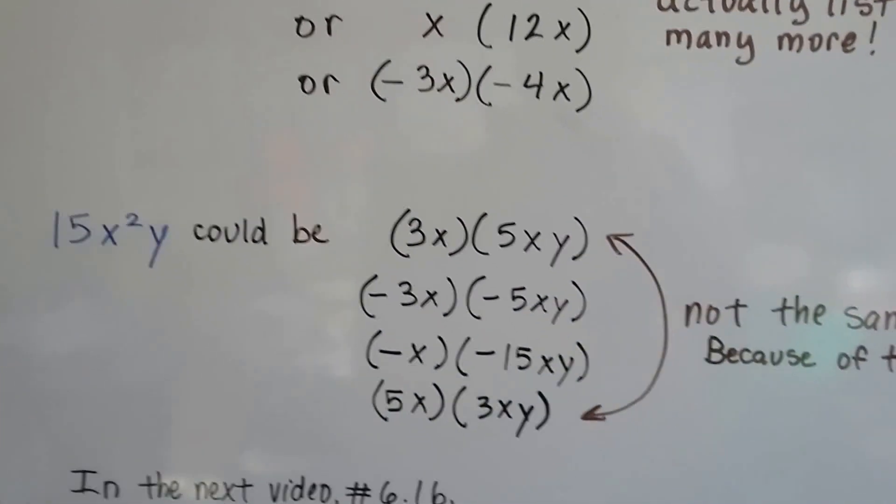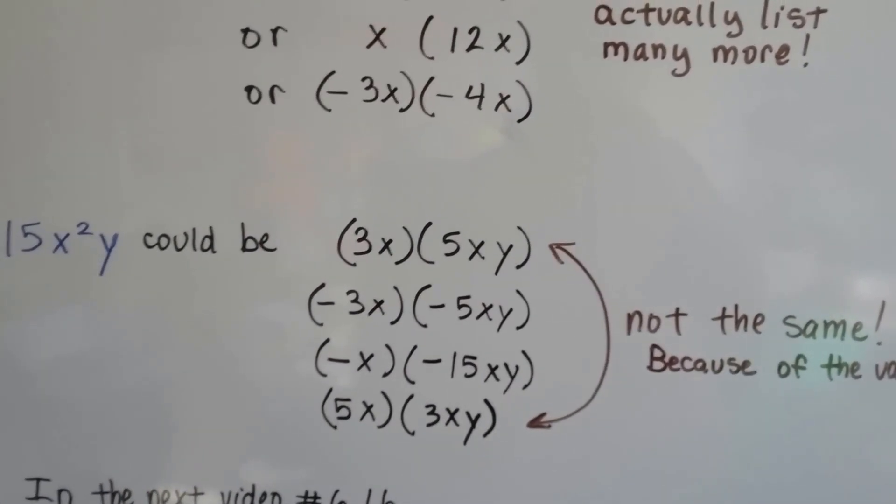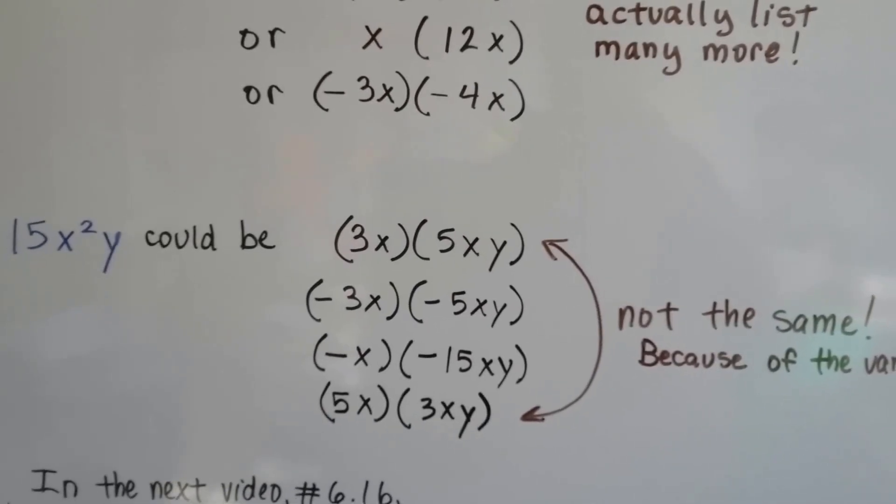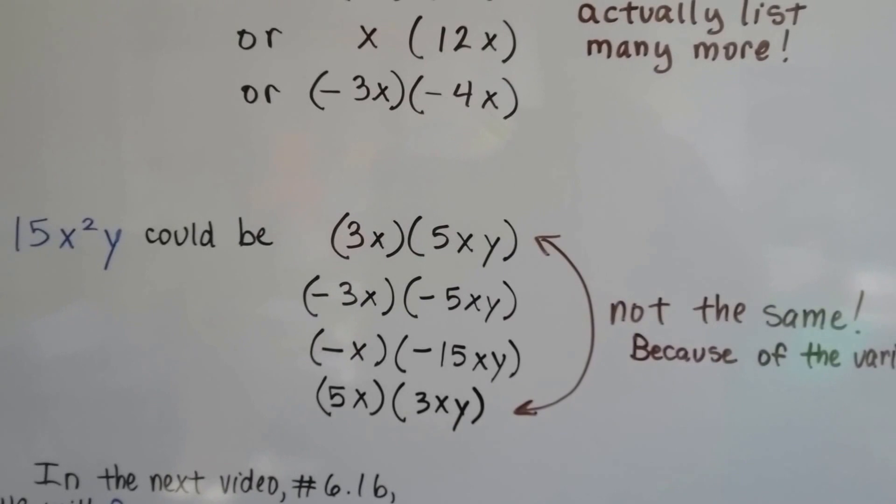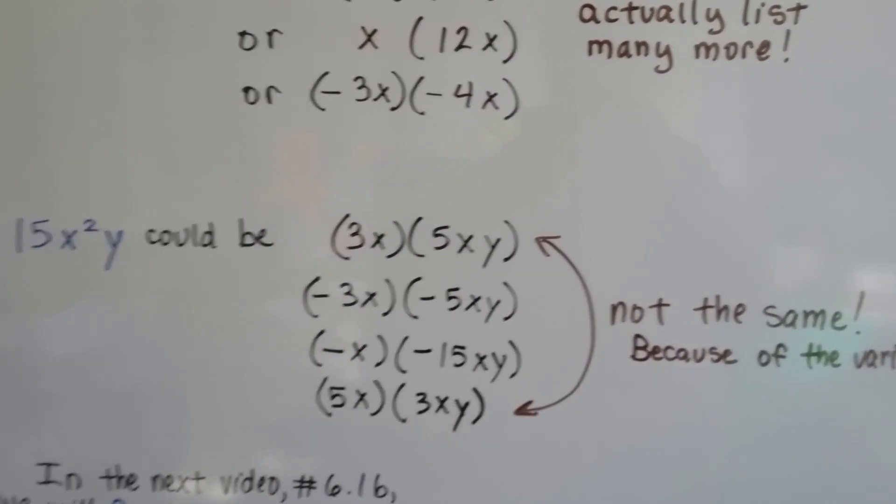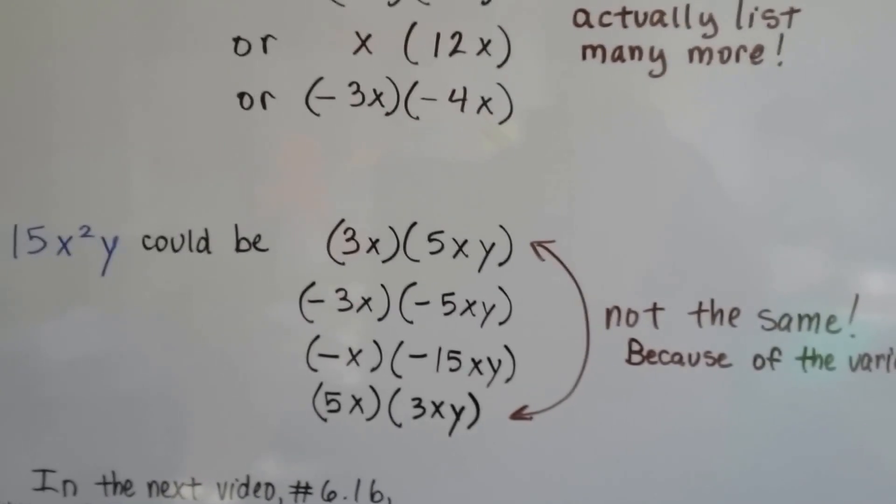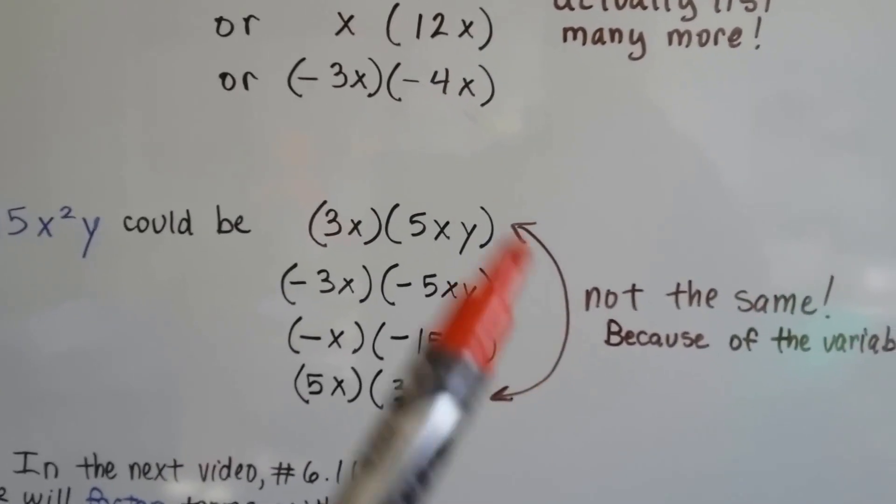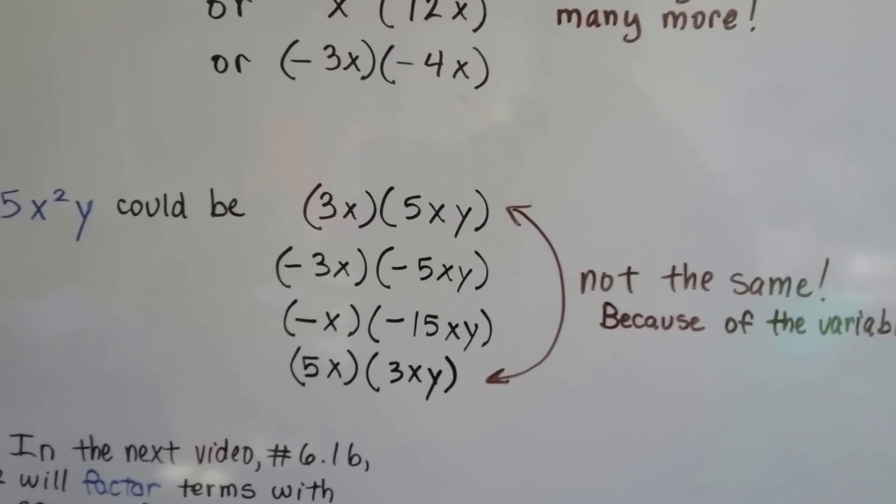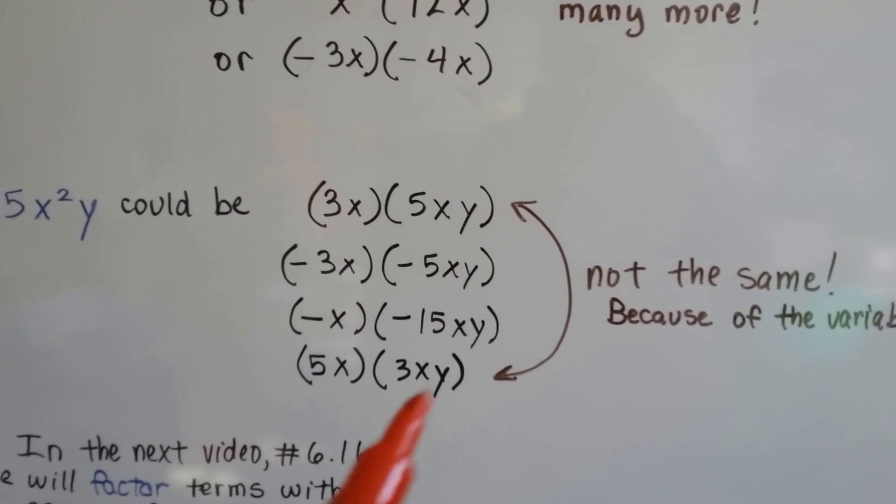If we wanted to factor 15x squared y, we could do 3x times 5xy. We could do negative 3x times negative 5xy. That would give us a positive 15x squared y. We could do a negative x times a negative 15xy. We could also do 5x times 3xy. And the bottom one and the top one are not the same because of the variables. Depending on what the variables stand for, these are two completely different numbers.